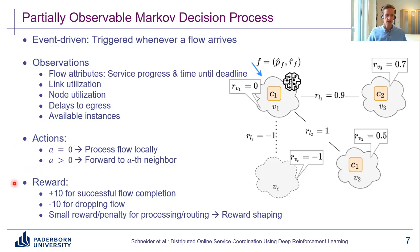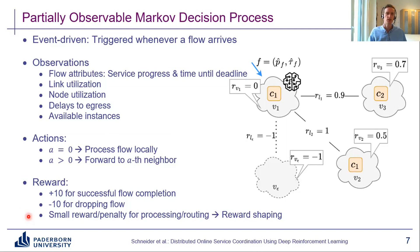After an action is taken, the agent is rewarded. Our goal is to maximize the amount of successful flows, so we give a large positive reward for completing a flow successfully and a large penalty for dropping a flow. Because these large positive rewards are seldom when starting with a random policy — they are very sparse and unlikely — we also introduce reward shaping, giving small additional rewards and penalties to nudge the agent in the right direction and support training.